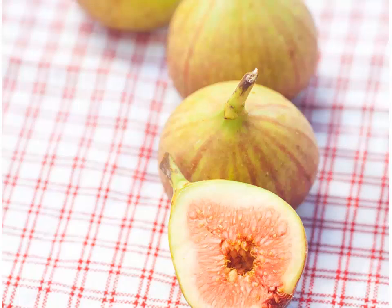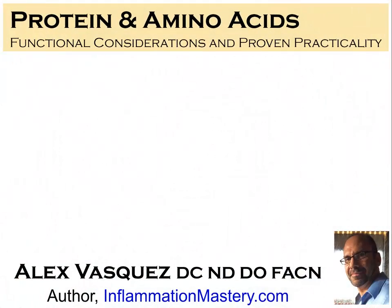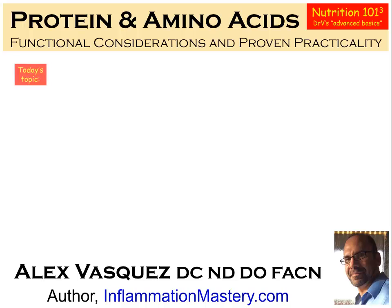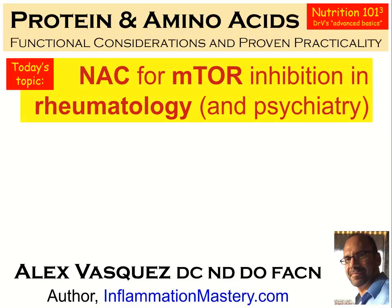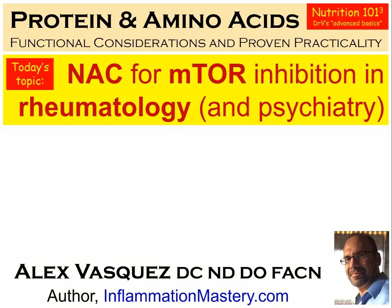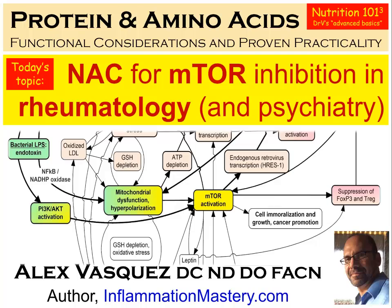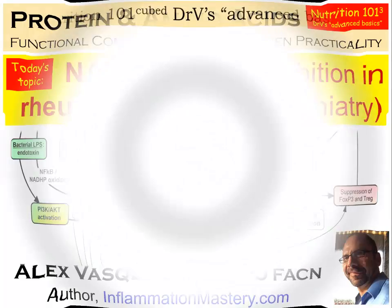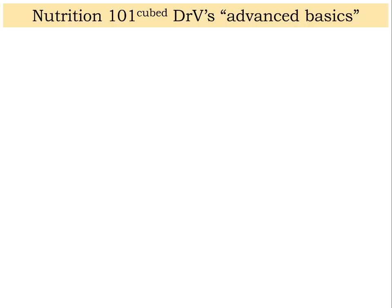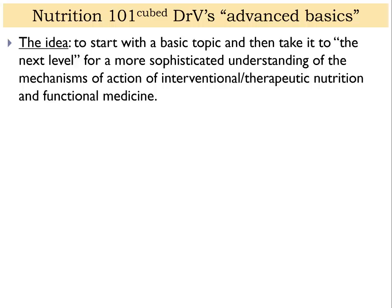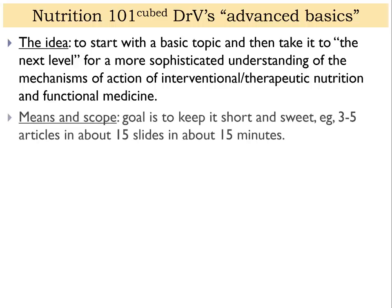I'll touch on that a little bit later. What I talked about last time in this series was the use of the amino acid NAC to block a specific inflammatory pathway called mTOR, and how that was relevant in rheumatic disease and to a lesser extent but still significant in psychiatry. The idea is to start with a basic concept or topic and then advance that to the next level.